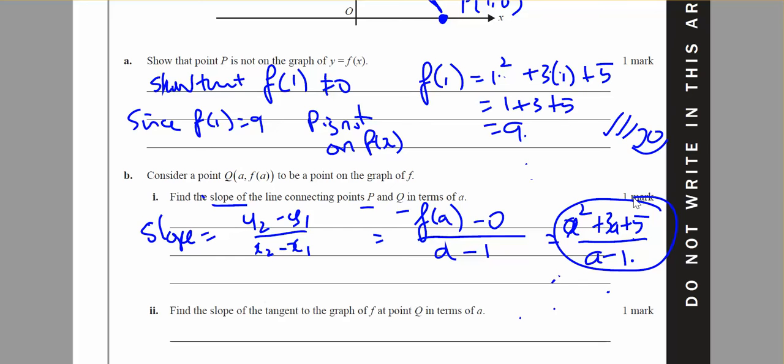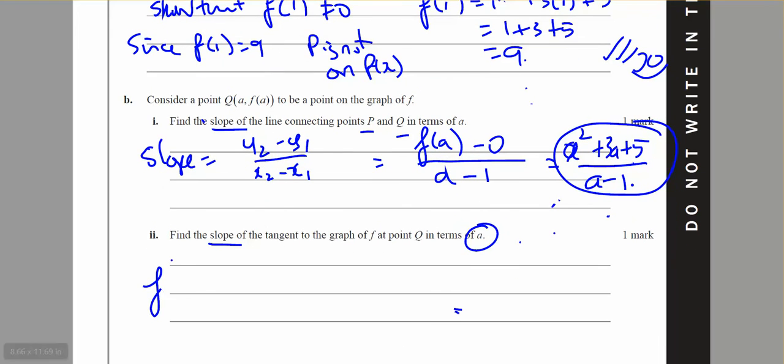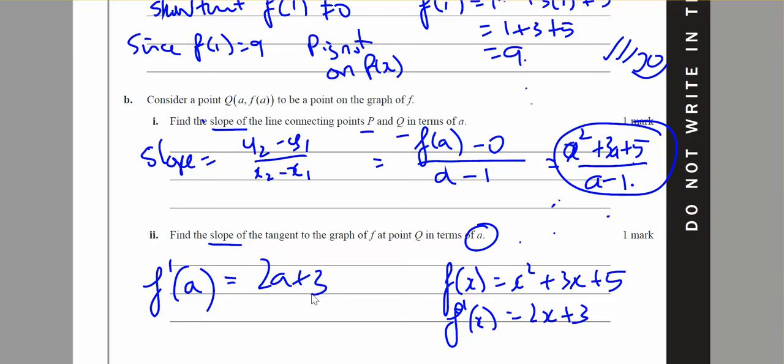Find the slope of the tangent to the graph of f at the point of Q in terms of a. So find the slope of the tangent. So that will be f dash of a. Take the derivative of f of x and f of x equals x squared plus 3x plus 5. Therefore f dash of x will equal 2x plus 3. Therefore the gradient will be 2a plus 3. So the slope will be 2a plus 3. And that's of the tangent.